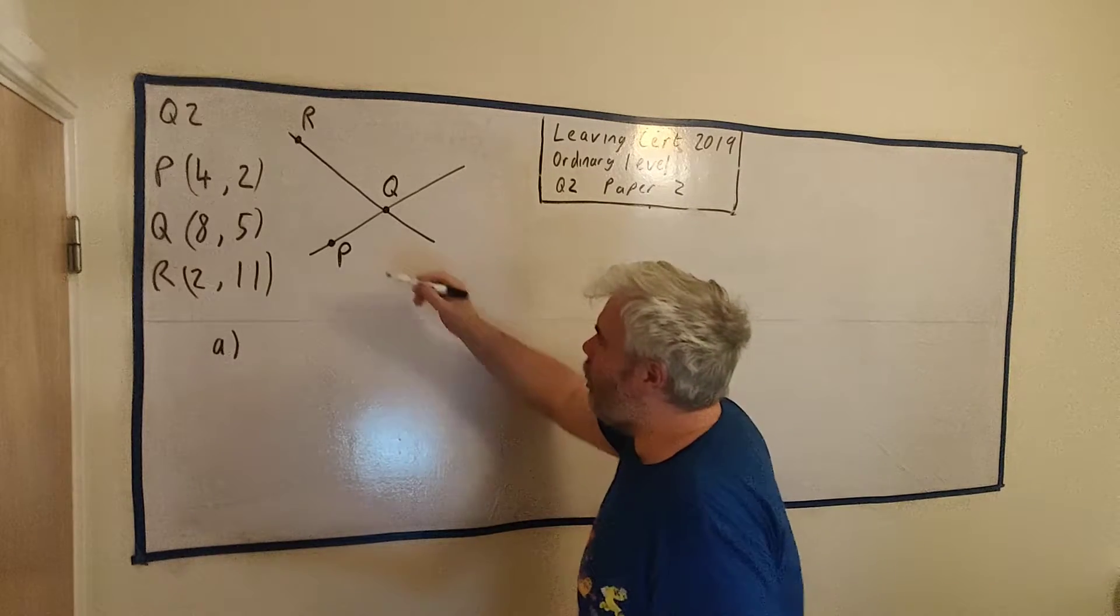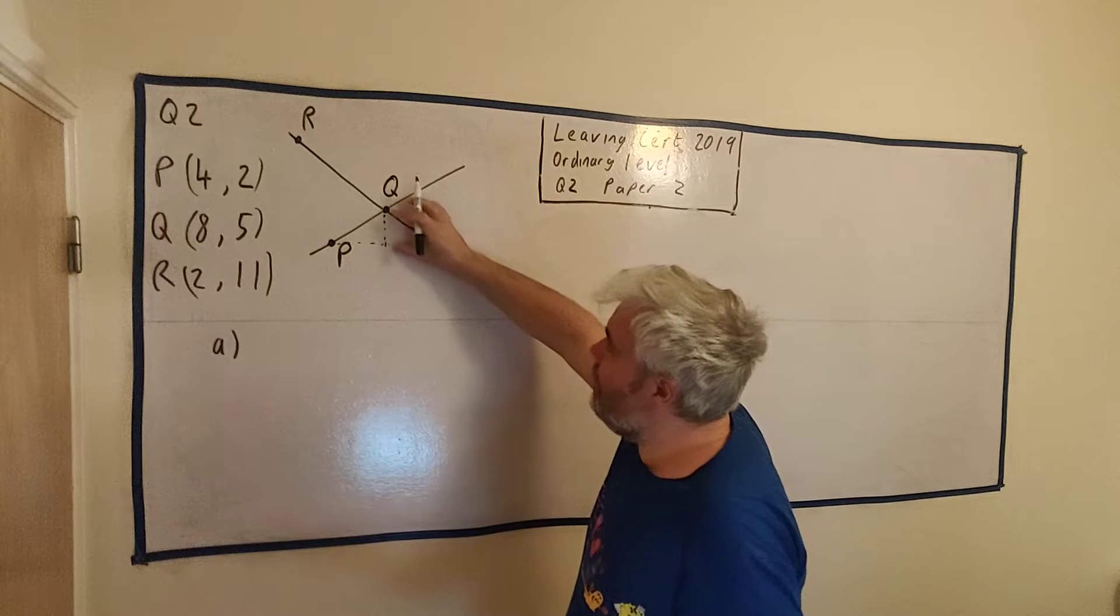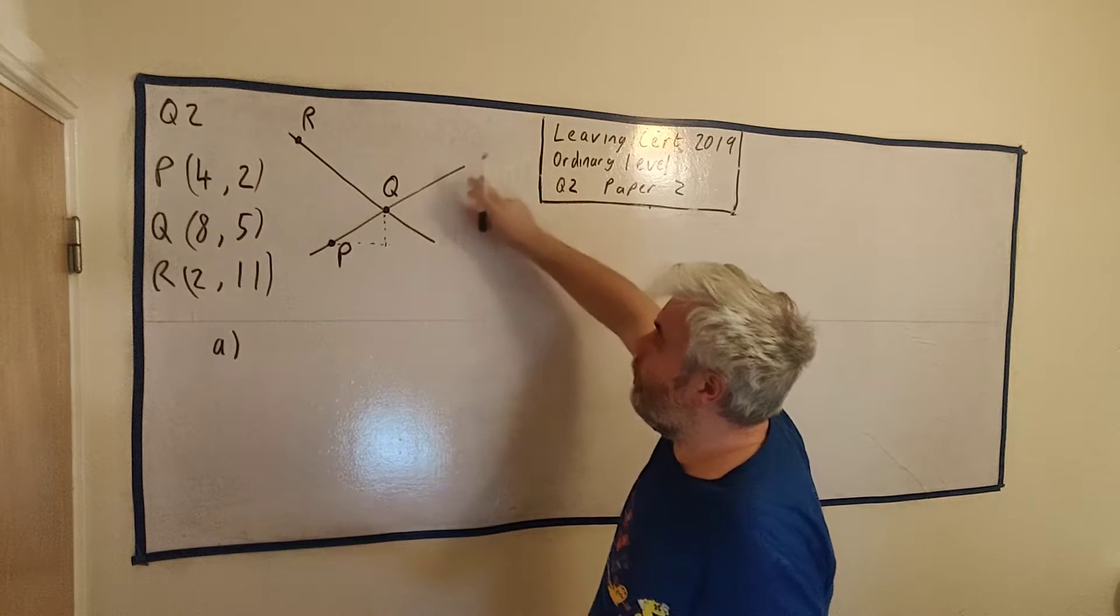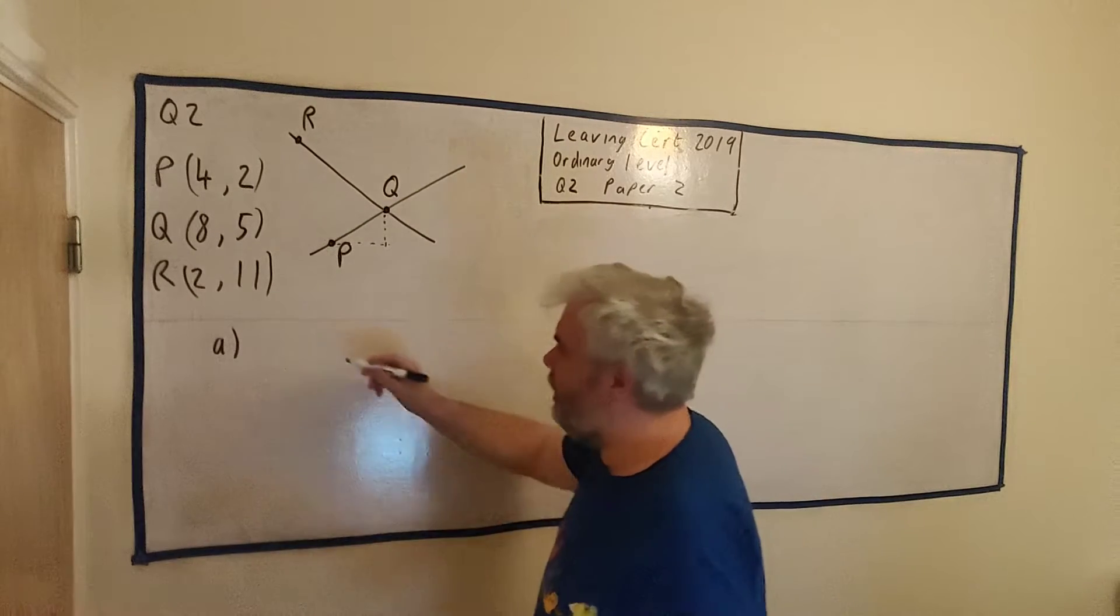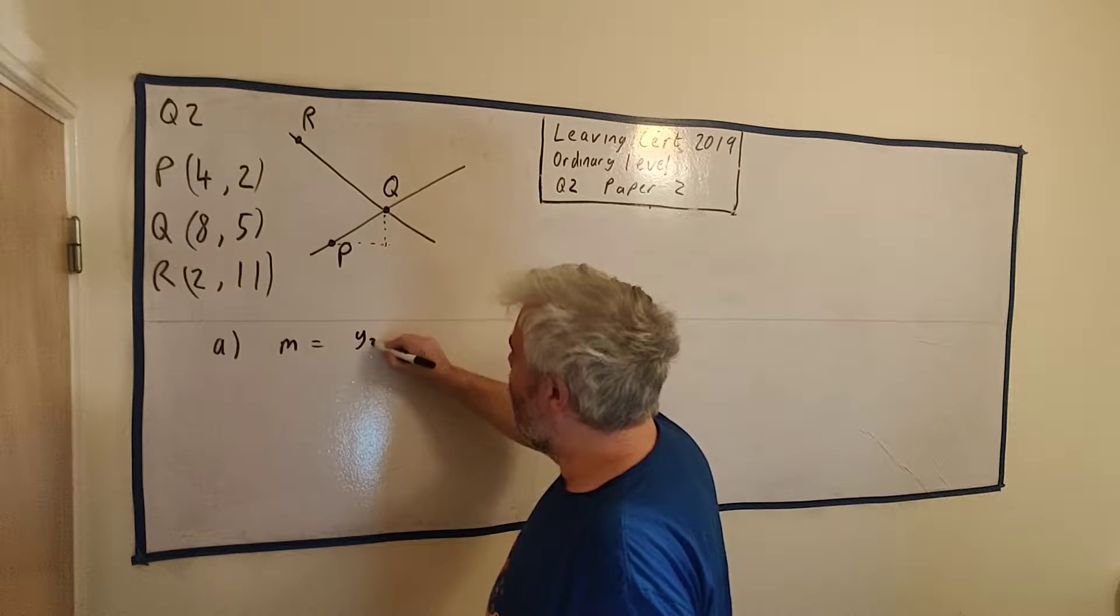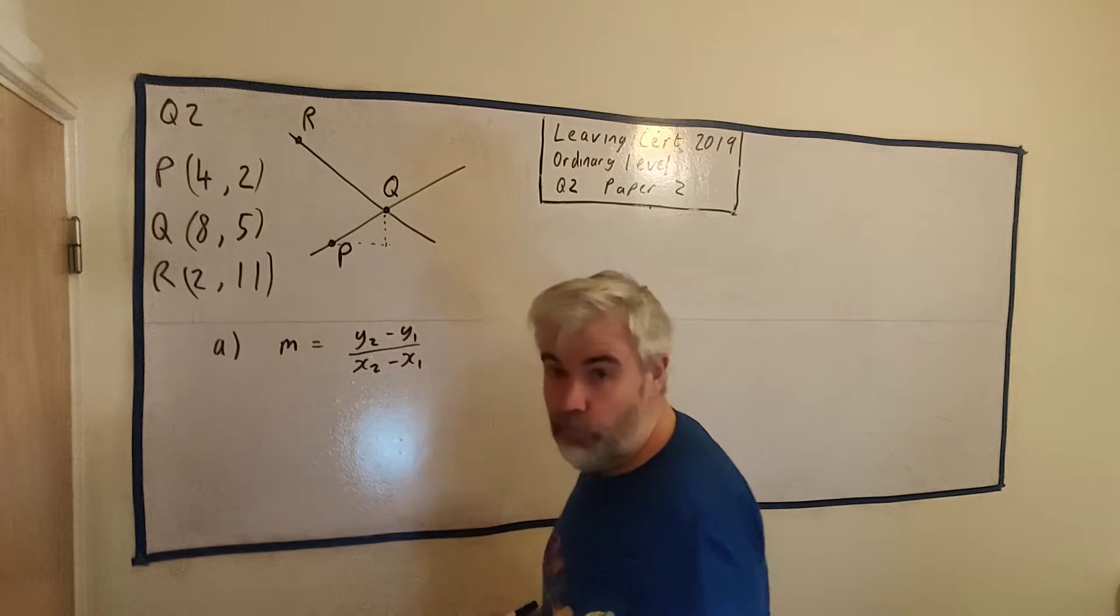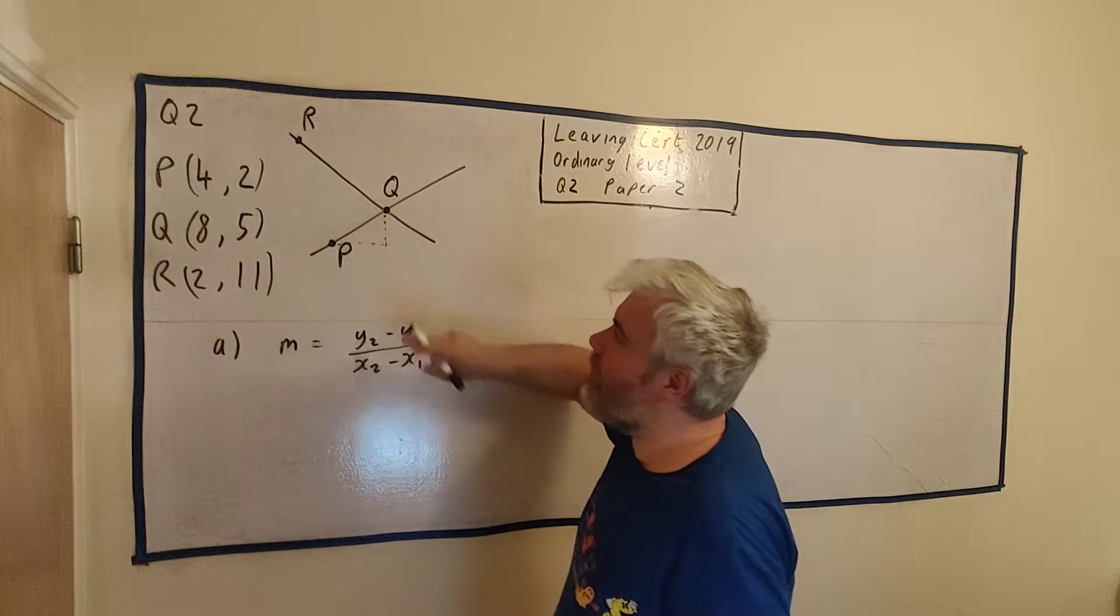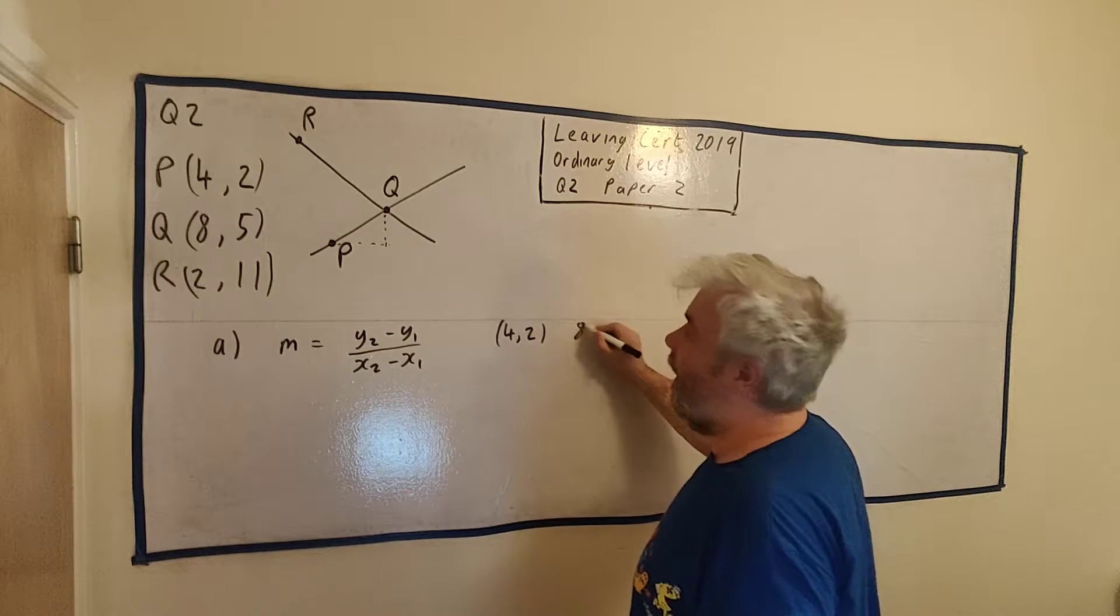Now we have a formula for that, or if you rather we can just draw a triangle. If we draw a triangle we just need to get this height divided by this length and make sure we're going positive or negative. Let's use the formula. M is equal to Y2 minus Y1 divided by X2 minus X1.